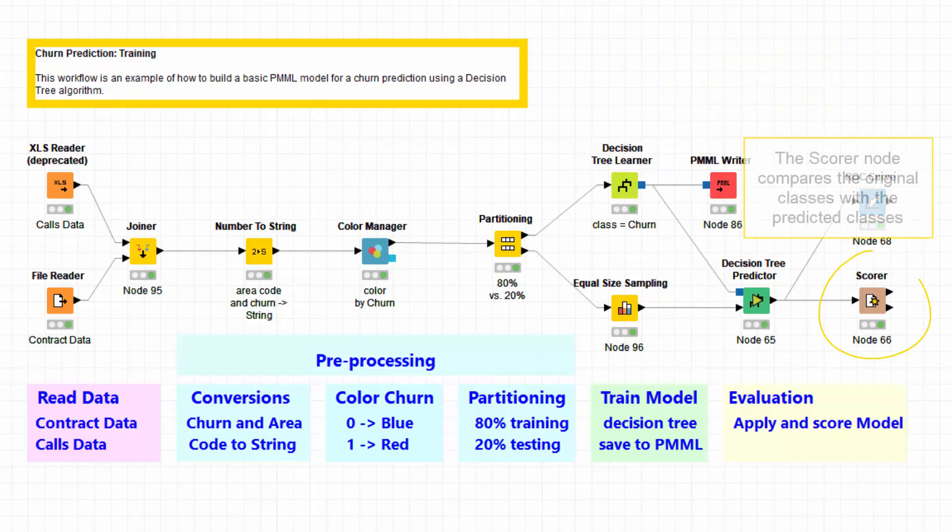Finally, the scorer node compares the original classes with the predicted classes in the test records and measures the model performance based on the true and false positives and negatives.